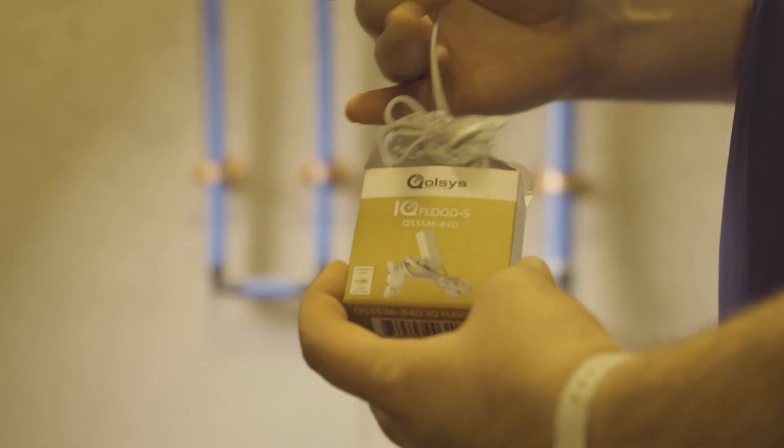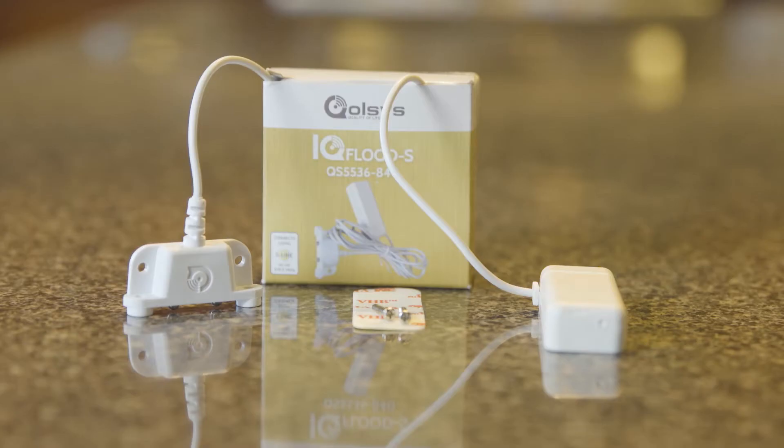Remove your sensor from the box. This consists of a transmitter, cable, sensor, double-sided tape, and two screws.